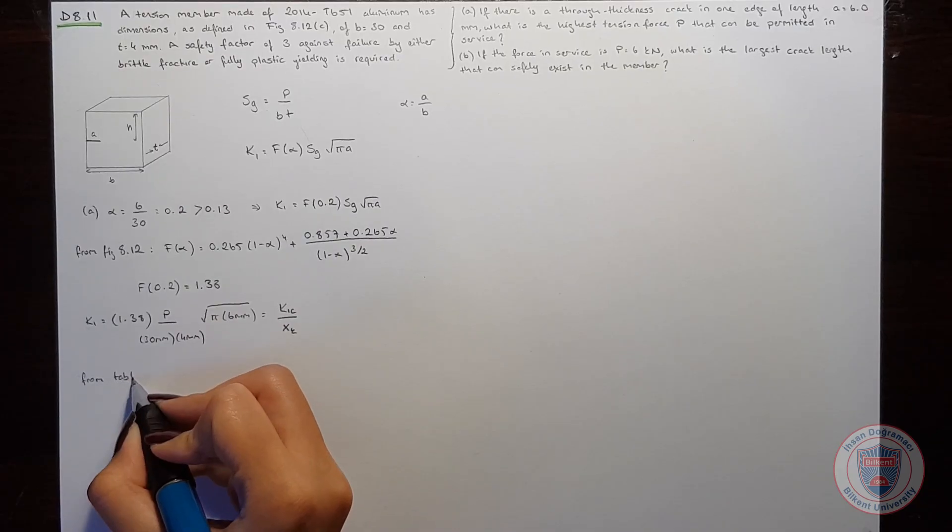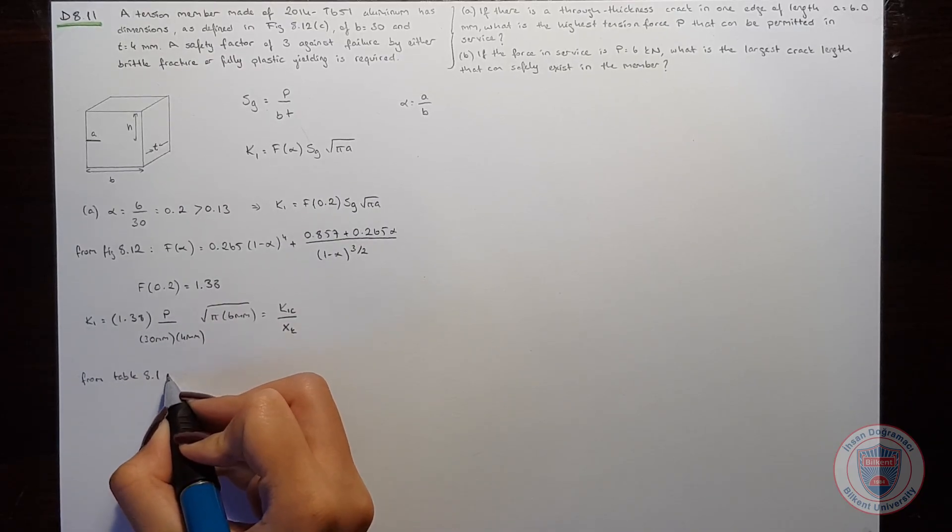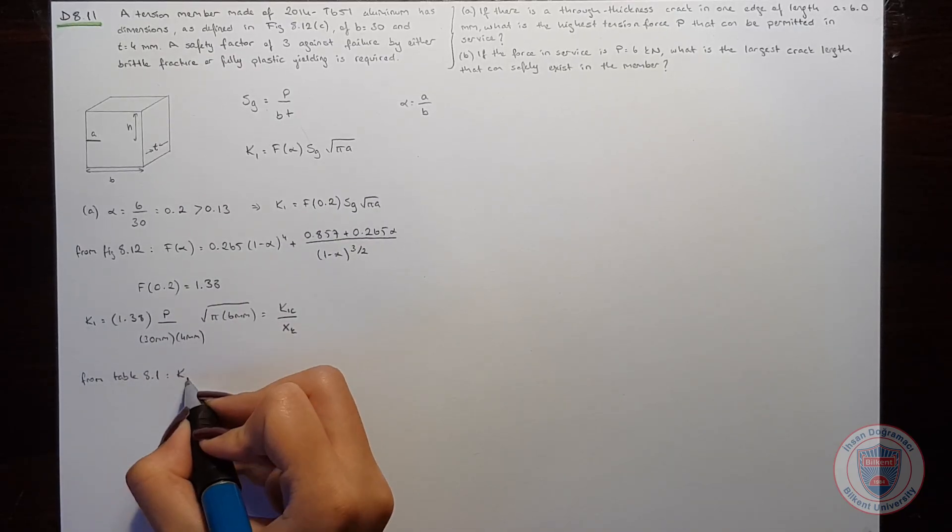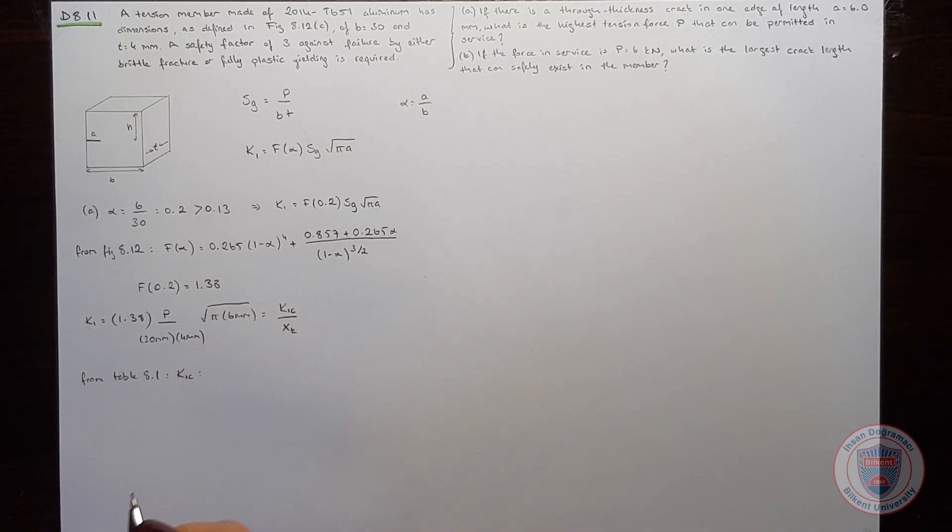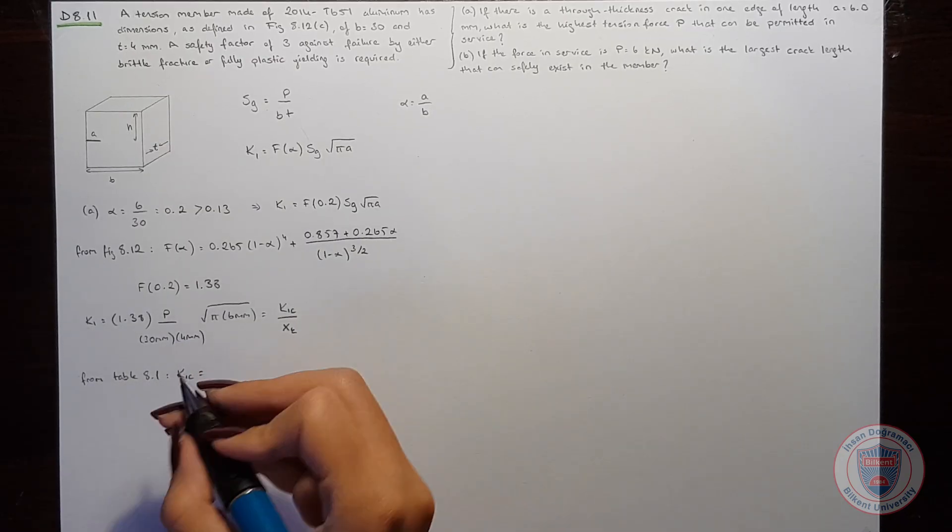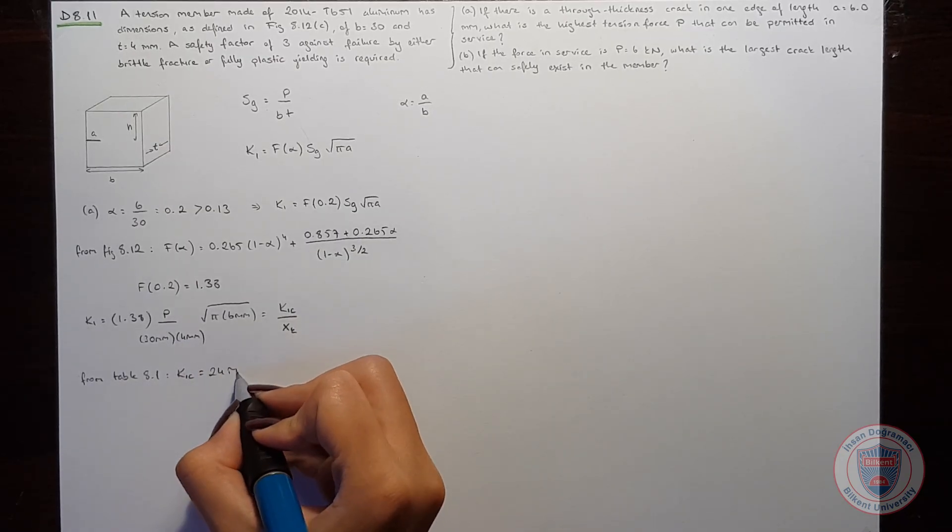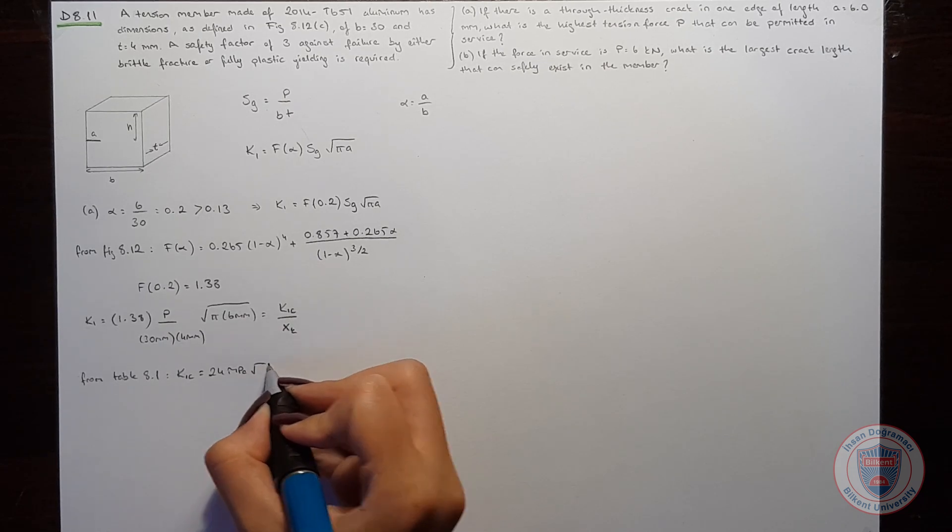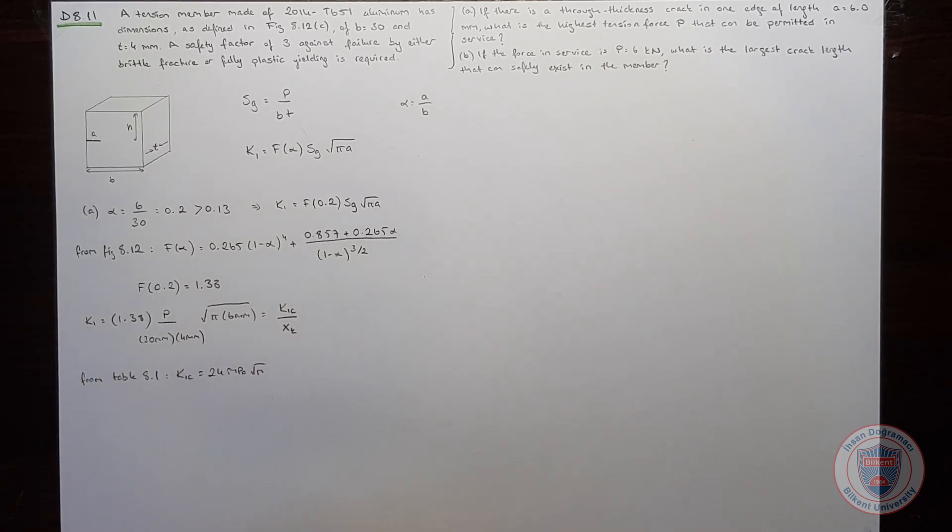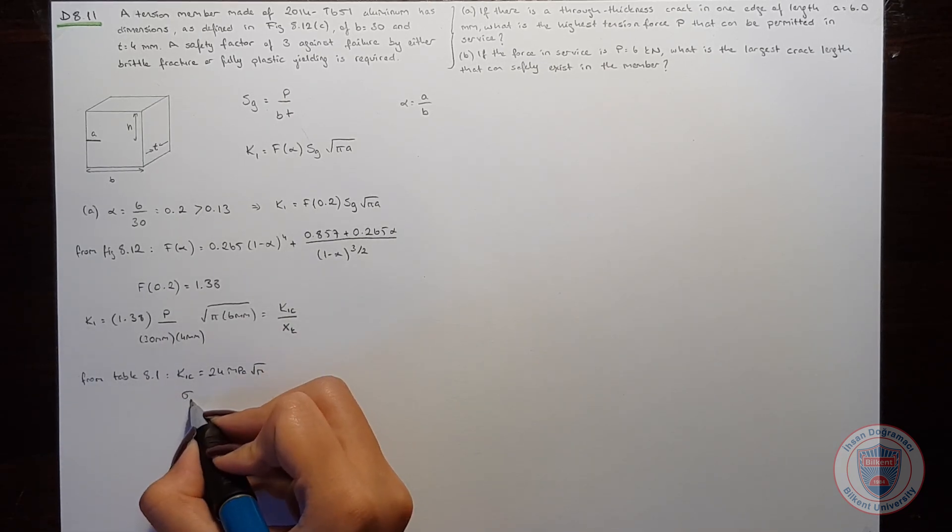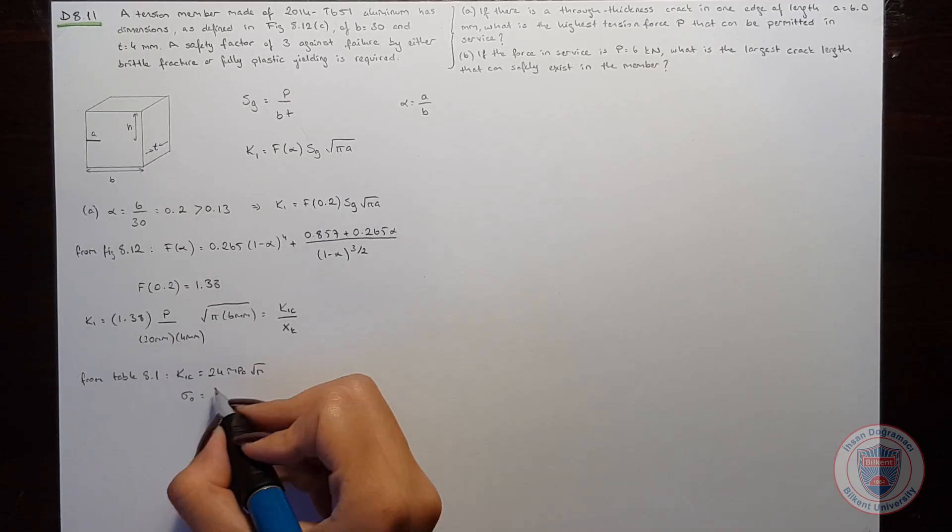From table 8.1, we have the critical stress intensity factor as 24 MPa square root of meters, and the yield strength as 415 MPa.